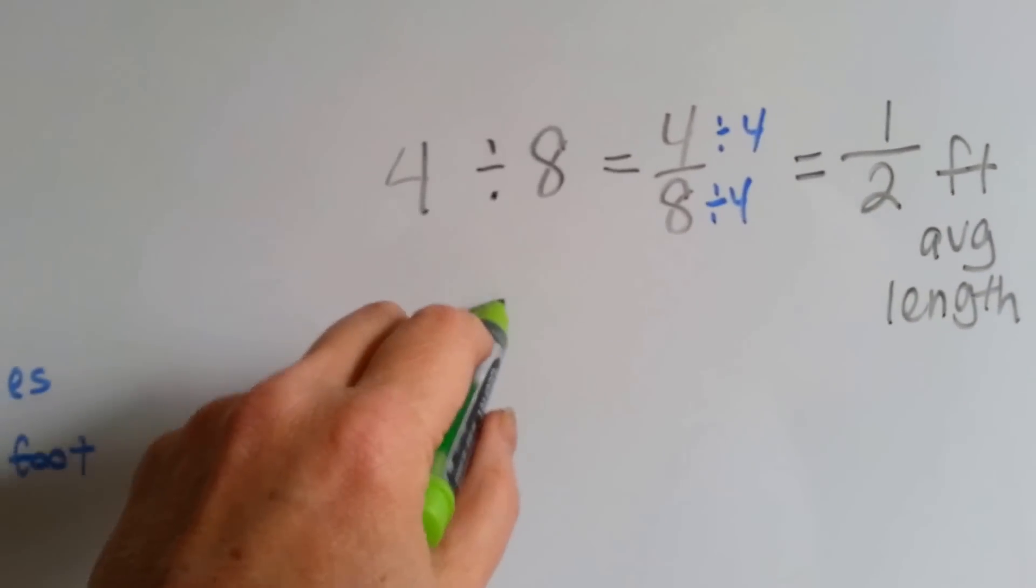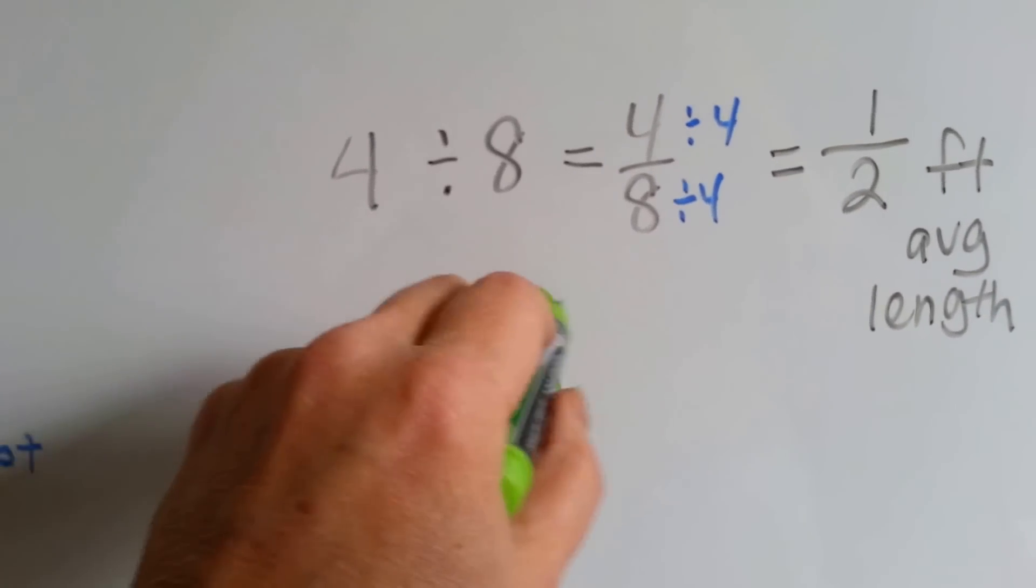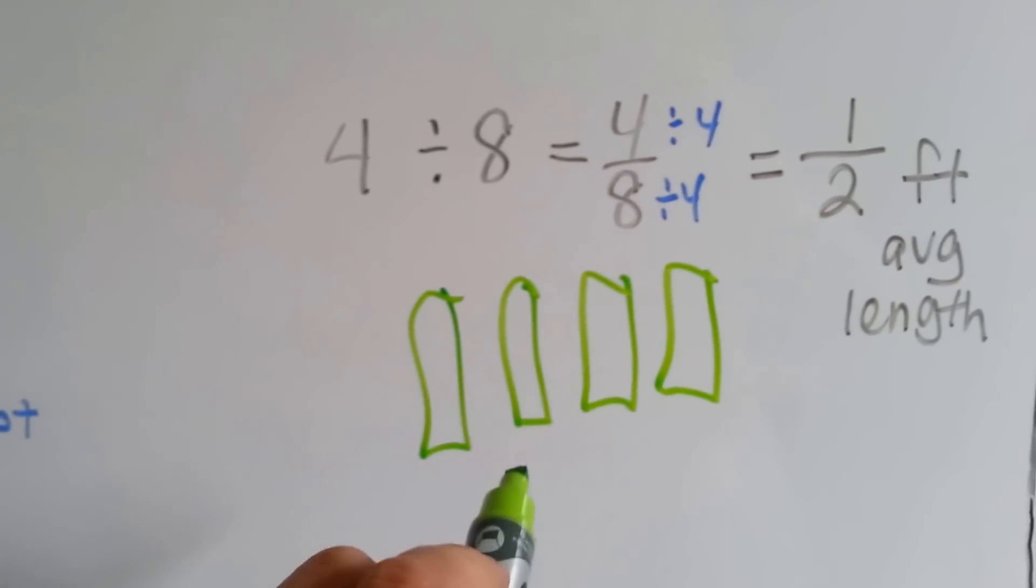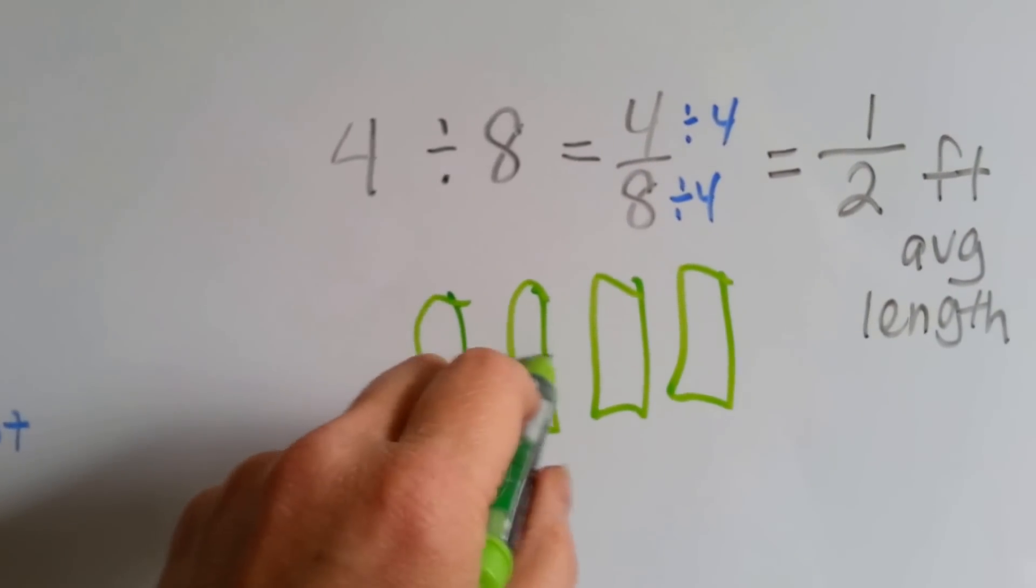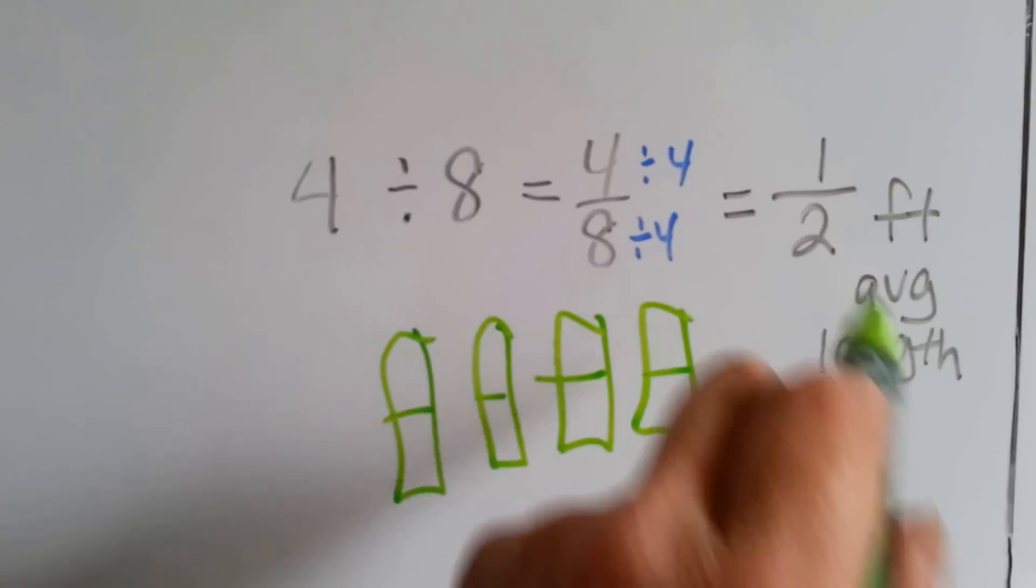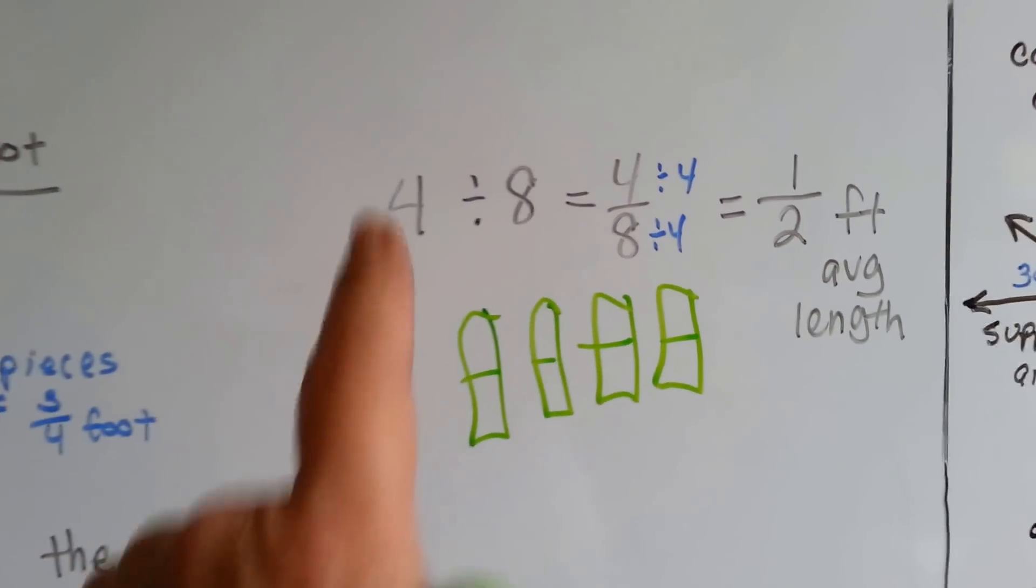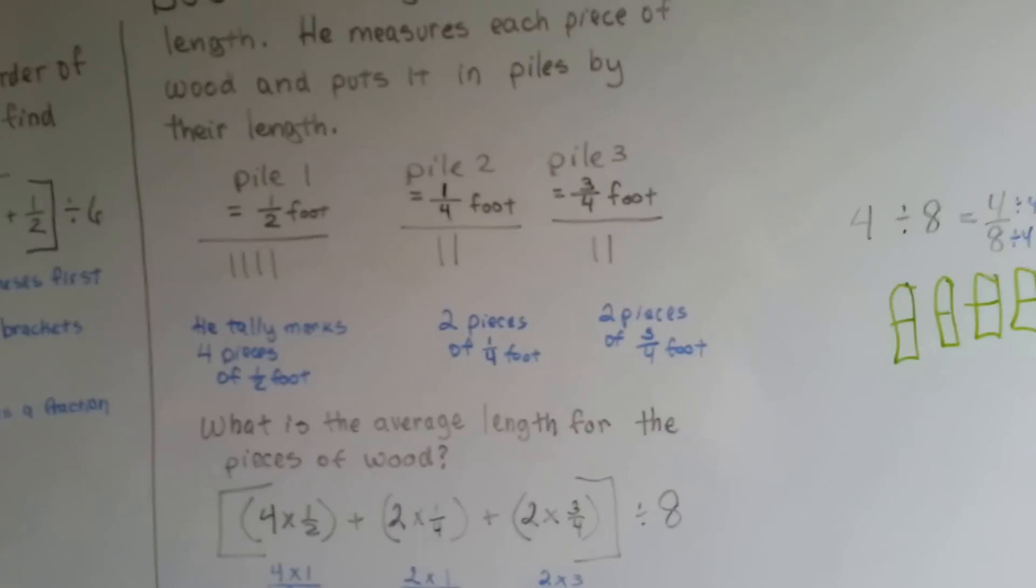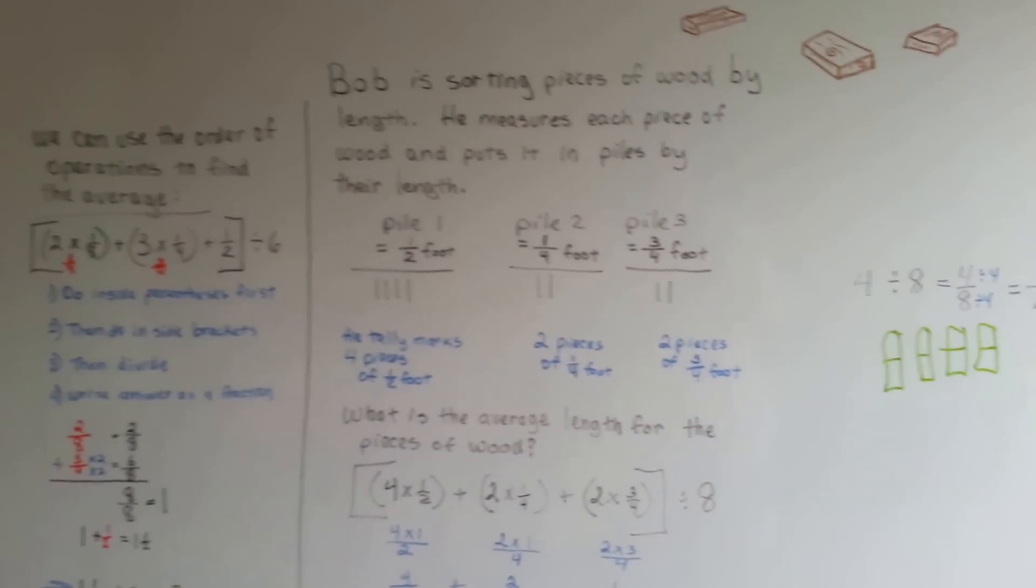Remember, if we've got four pieces of wood, and we want to divide it into eight pieces, then we would just cut them in half, wouldn't we? See? Half. That's why four divided by eight is the same thing as four-eighths. That was in our last chapter, in chapter eight.